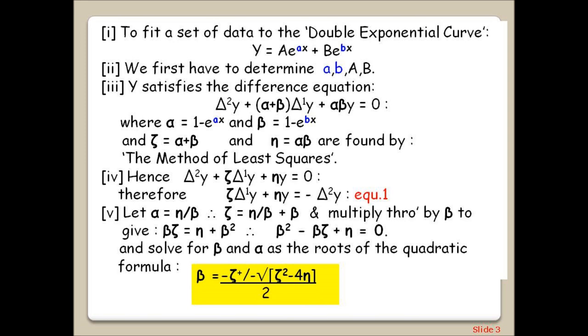3. Y satisfies the difference equation shown, where alpha equals 1 minus E to the AX and beta equals 1 minus E to the BX. And zeta equals alpha plus beta and eta equals alpha times beta are found by the method of least squares. Delta 1Y and delta 2Y are the first and second finite differences in the Y values.